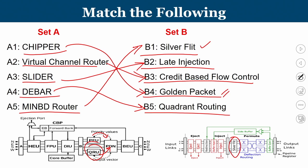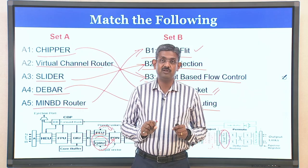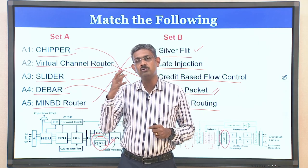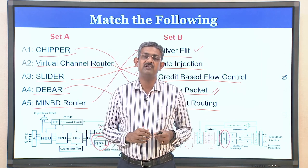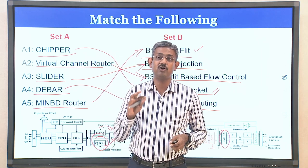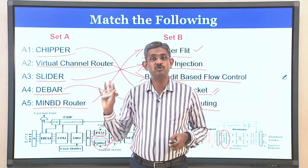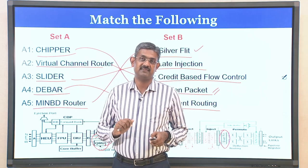In summary: chipper uses the golden packet concept for prioritization; virtual channel router uses credit-based flow control; slider uses late injection where newly created packets are injected only after port allocation based on empty slot availability; D-bar uses quadrant routing to create output vectors fed into the PDN; and minbd router has an additional silver flit prioritization level beyond golden packet. Knowing the internal workings of these routers is essential to solve matching questions like this.